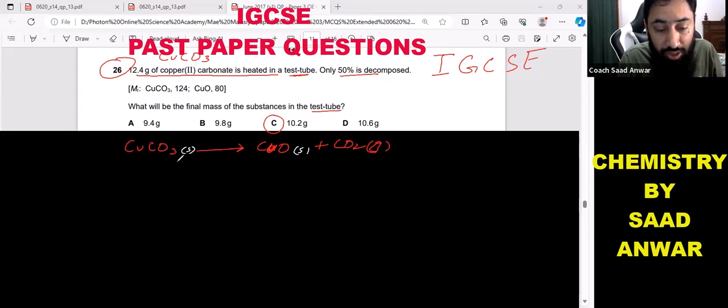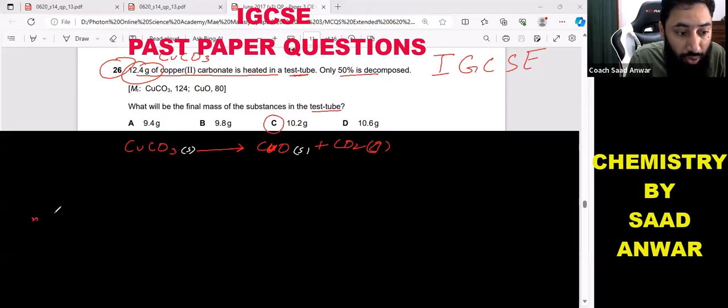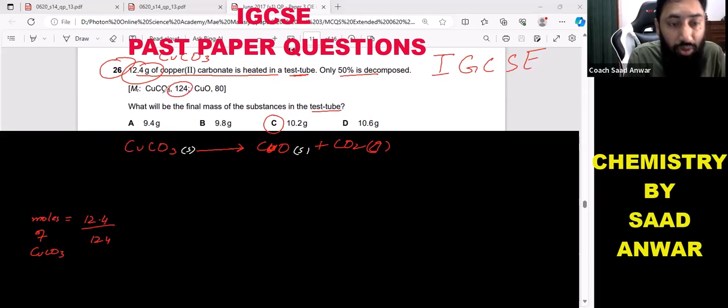And 12.4 grams of copper carbonate is given to me, so I'm gonna convert this into moles. So the moles of copper carbonate will be 12.4 divided by 124, because 124 is the molar mass, the formula mass of copper carbonate.